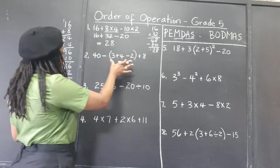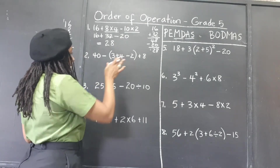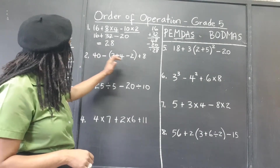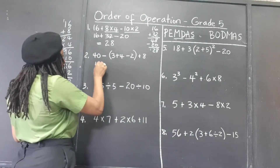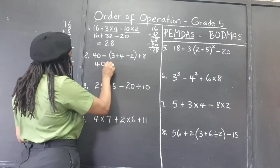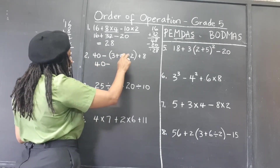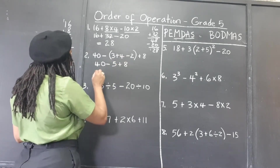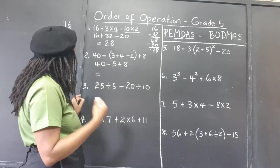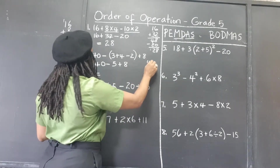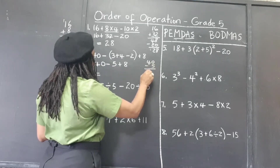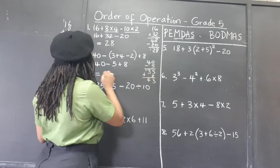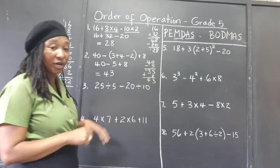For the next example, we have a bracket, and we need to work what's inside the brackets first. We don't see any multiplication or division inside. So 3 plus 4 is 7, take away 2 is 5. Now we have 40 take away 5, which is 35, plus 8, which is 43. Our final answer is 43.